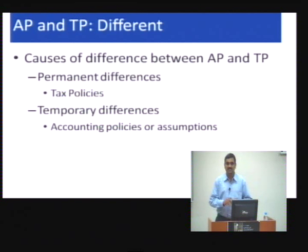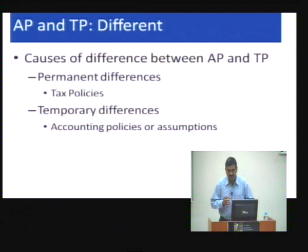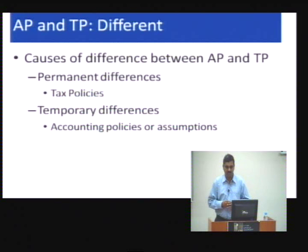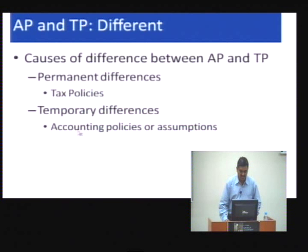As a result, tax profit most of the time will not equal accounting profit. The reasons for these differences fall into two categories: permanent differences, which arise because of tax policies, and temporary differences, which arise because of accounting policies.